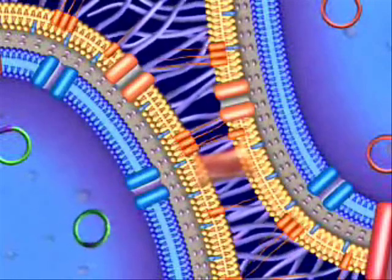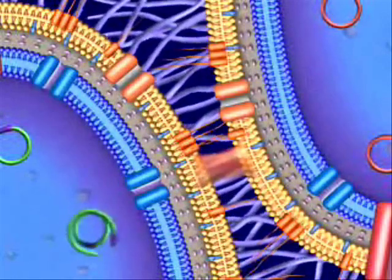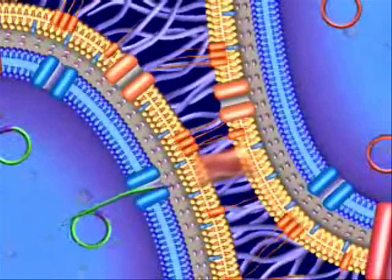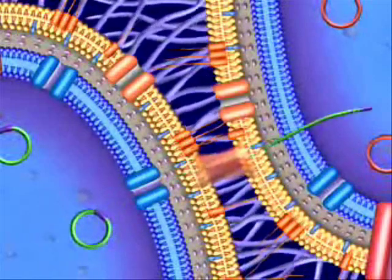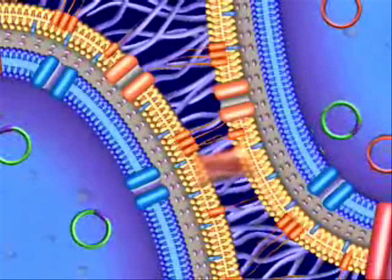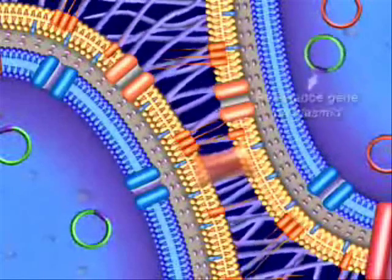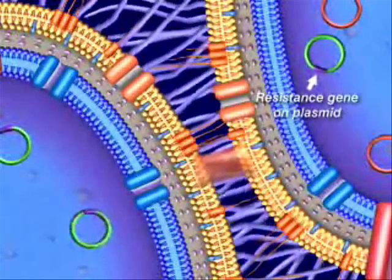This allows a copy of the plasmid, as it is duplicated, to be transferred from one bacterium to another. This enables a susceptible bacteria to acquire resistance to a particular antimicrobial agent.